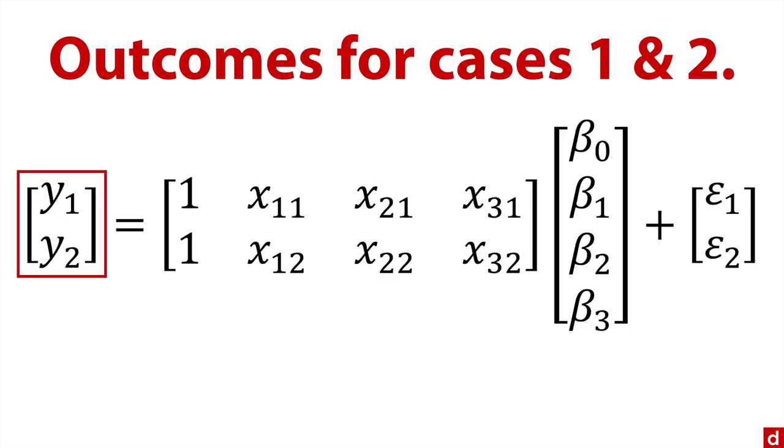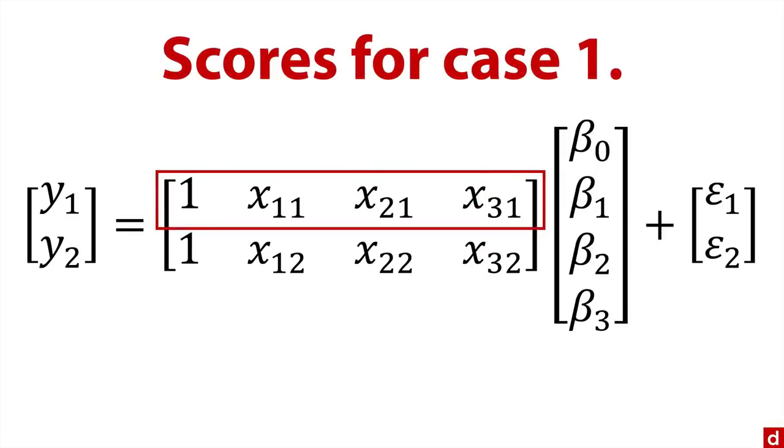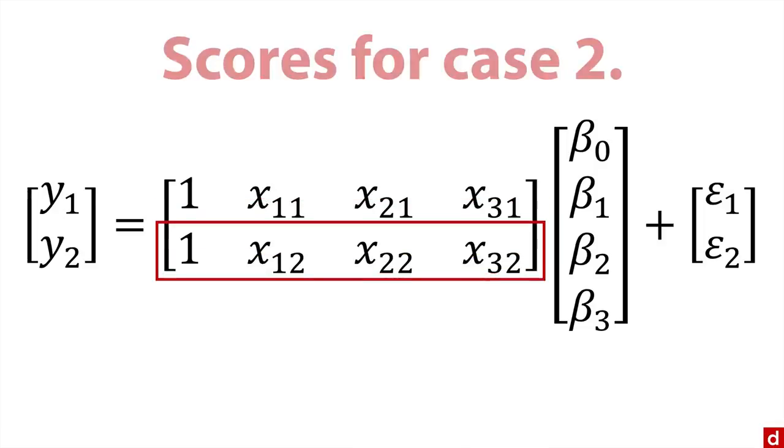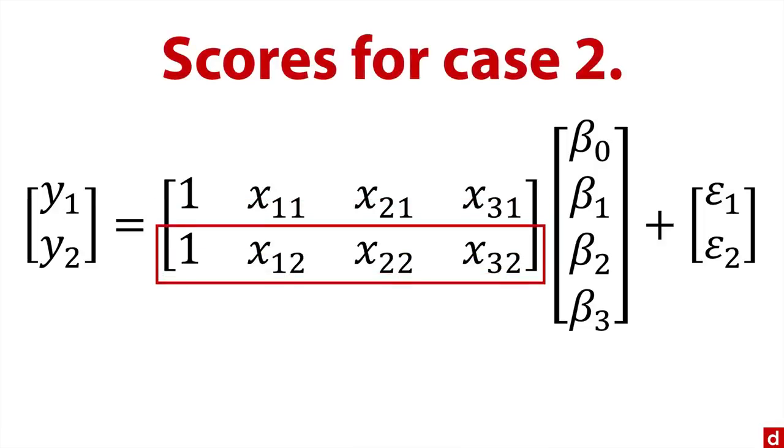Here on the far left, it's a vector because it's a single column of values. Next to that is a matrix that has here on the top the scores for case one, which I've written as x1 is for variable one, x2 is for variable two. And the second subscript indicated is for person one. Below that are the scores for case two, the second person.